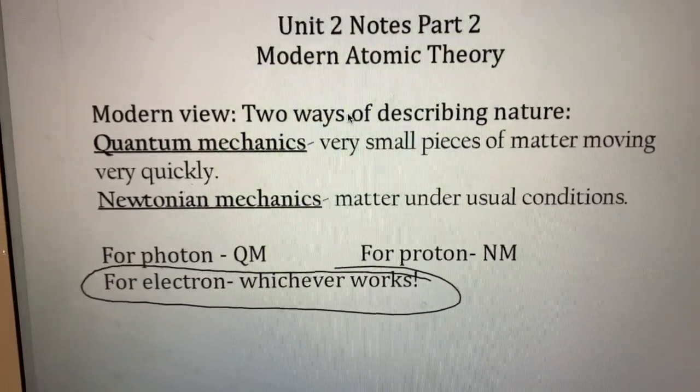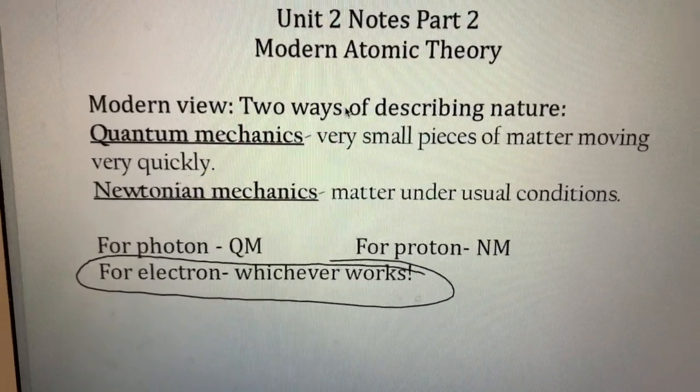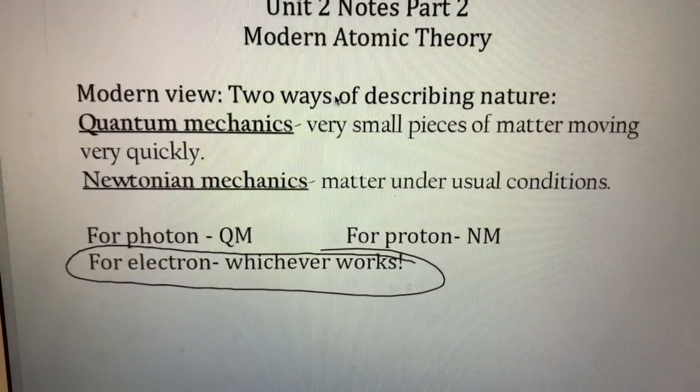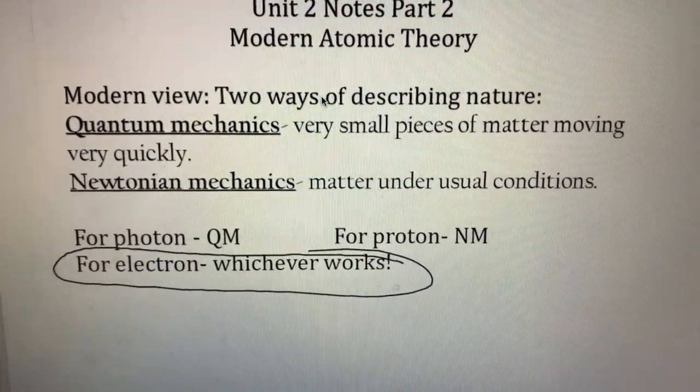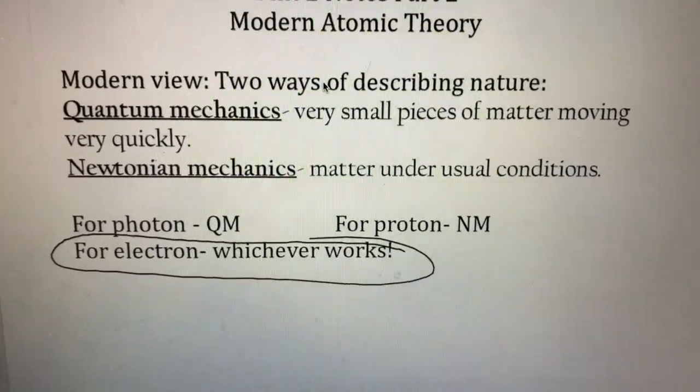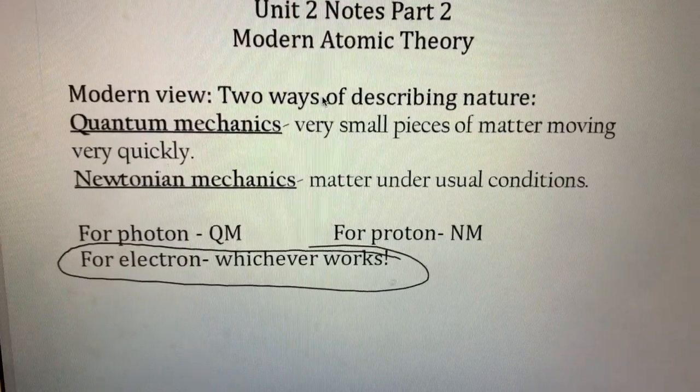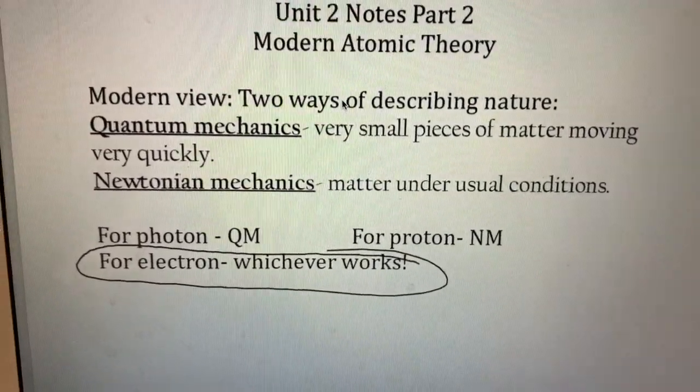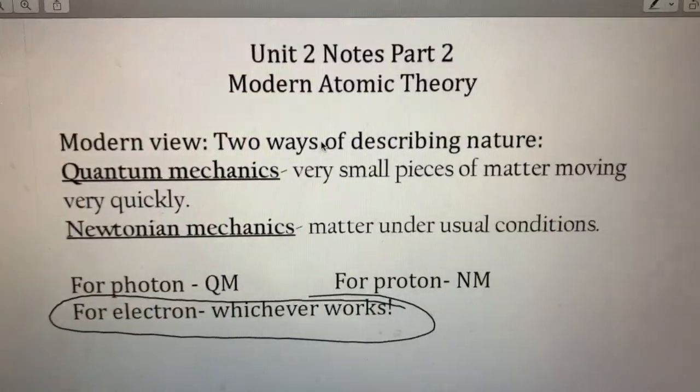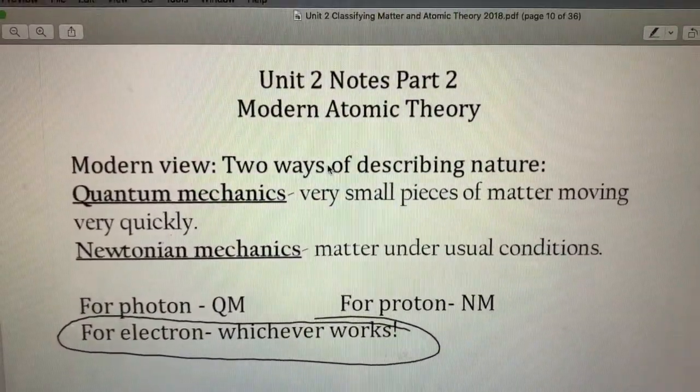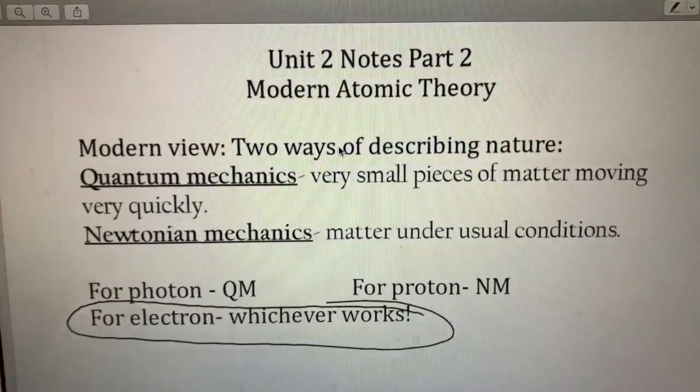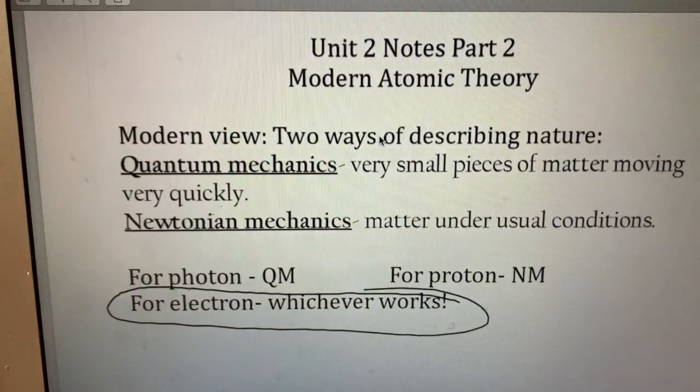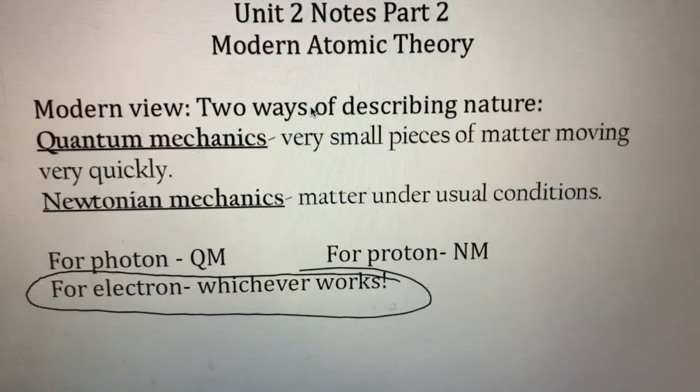This is a little more physics than chemistry. There's basically two ways of describing nature. There's what is known as quantum mechanics for very small pieces of matter moving very quickly, and Newtonian mechanics which is classic physics describing how matter moves. For a proton, that particle is large enough that its behavior can be described by classic Newtonian mechanics. For a photon, a little piece of light or energy, you'd need quantum mechanics. In chemistry, what we care about is the electron, and our job today is to try and describe where the electron is in the atom and why it behaves the way it does.